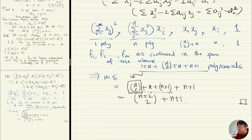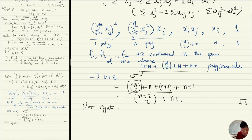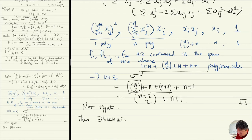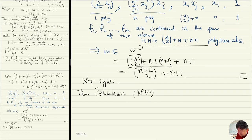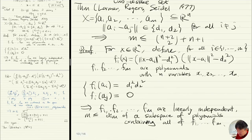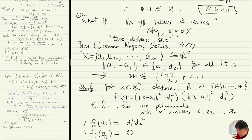This bound is not tight actually. Eight years later, there is an improvement proved by Blokhuis in 1984. Larman-Rogers-Seidel proved it's at most C(n+2,2) + n + 1, but Blokhuis improved this. So what did Blokhuis prove? An improvement — without the extra n+1.